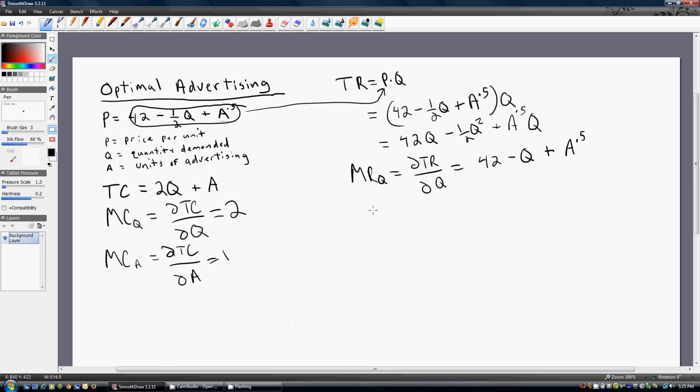Now the next marginal revenue we want is not the marginal revenue of output, but the marginal revenue of advertising. The marginal revenue of advertising will tell us how much total revenue will increase from producing one more unit of advertising.